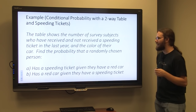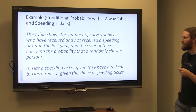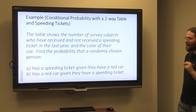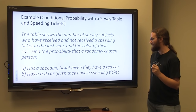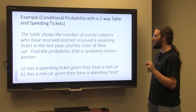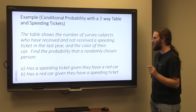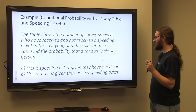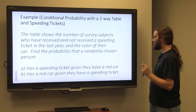We want to find the probability that a randomly chosen person: A, has a speeding ticket given they have a red car, and B, has a red car given that they have a speeding ticket.